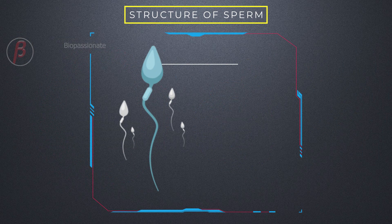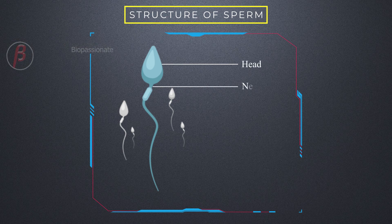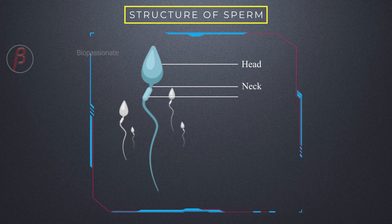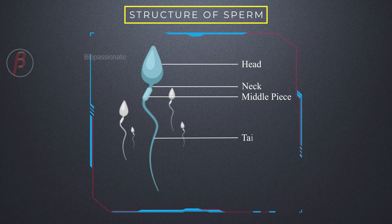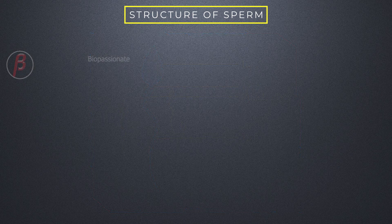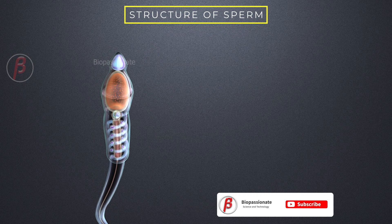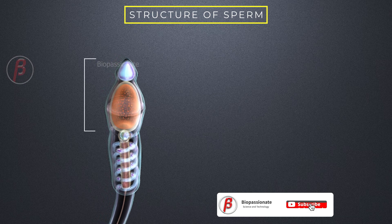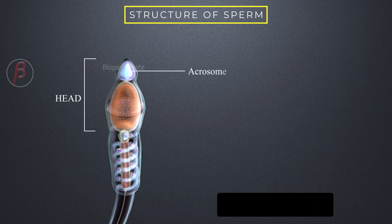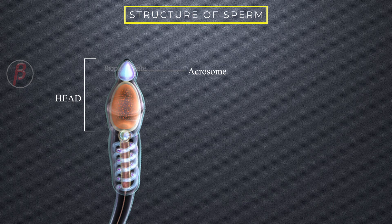A typical mature sperm cell consists of four important regions called: head, neck, middle piece, and tail. The head consists of an acrosome and a haploid nucleus.